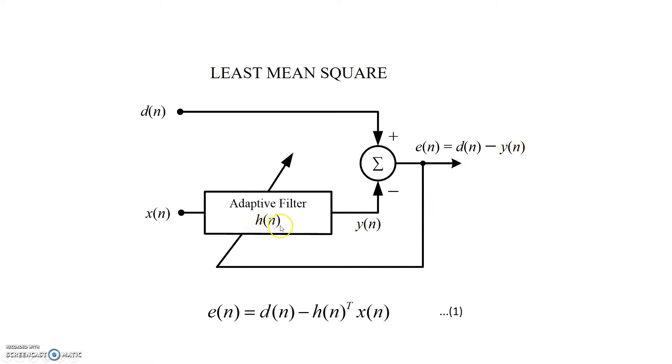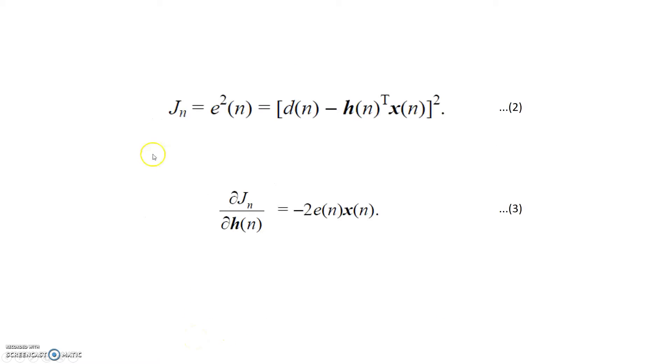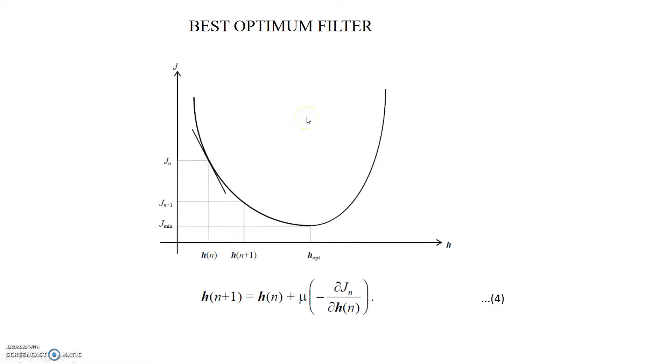If we substitute the value of y(n), that is h(n) into x(n), we will have the first equation. If we take the square of this error signal, then we will have equation like this and we are calling it j(n). If we take the derivative of j(n) with respect to h(n), we will have minus 2 e(n) x(n). We will use this equation later.